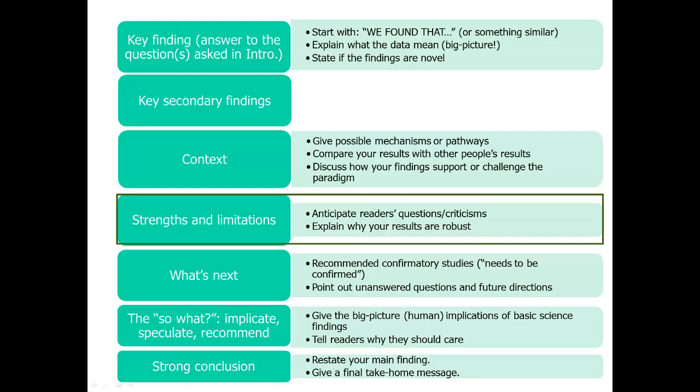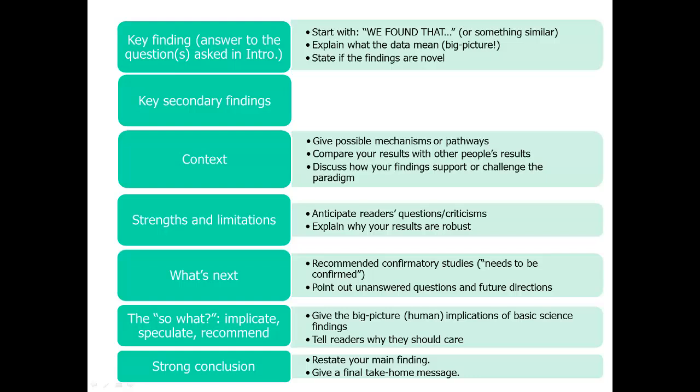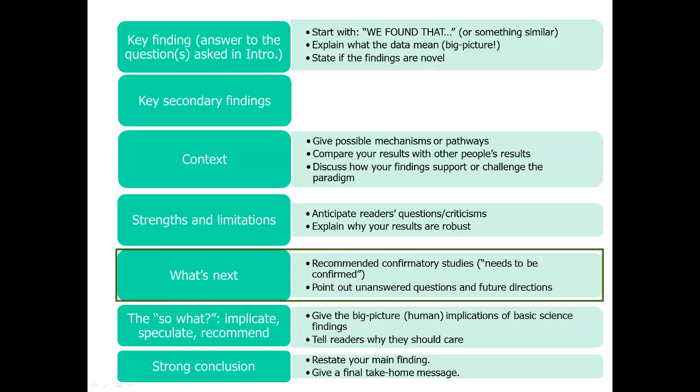A lot of times people write the limitations section in a very generic way — 'my study was small' — in a way that could apply to almost any study in that discipline. Don't write a generic limitations section. Really point out what limitations matter for your specific paper. Try to anticipate the reader's criticisms.